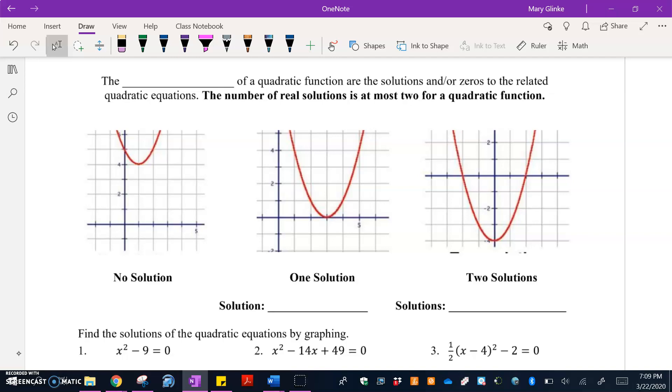So if you look at the three graphs down below, you can see that the first one has no solution at all. The next one has one solution and the last one has two solutions. And this is because the solutions to these are going to be where the graph crosses the x-axis, also known as the x-intercept.